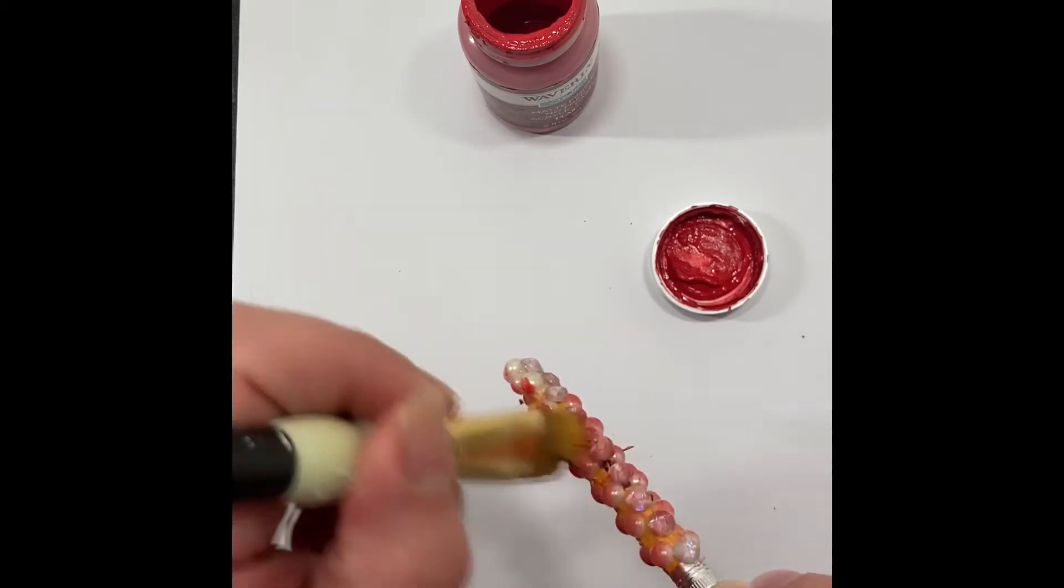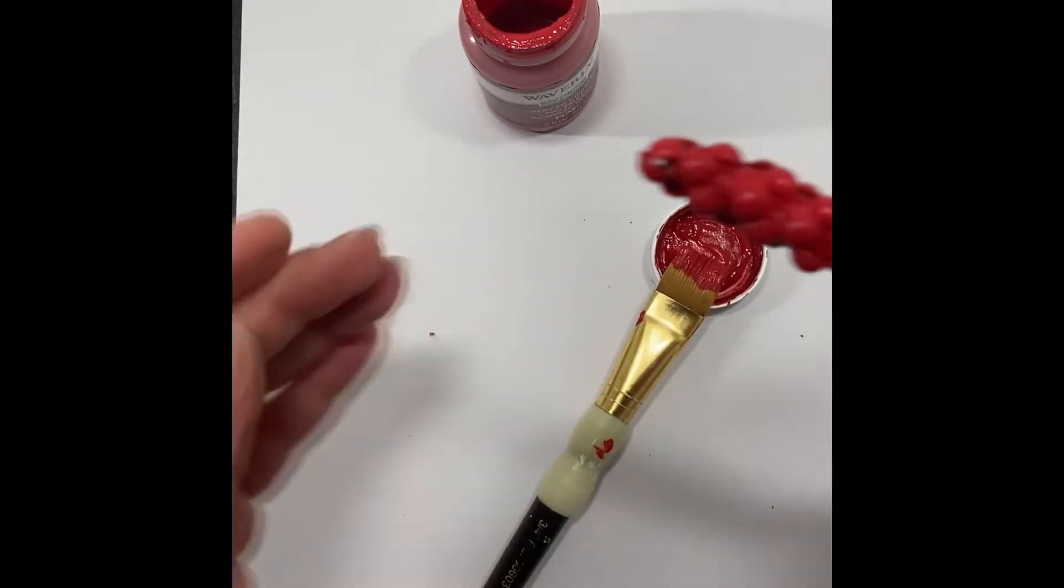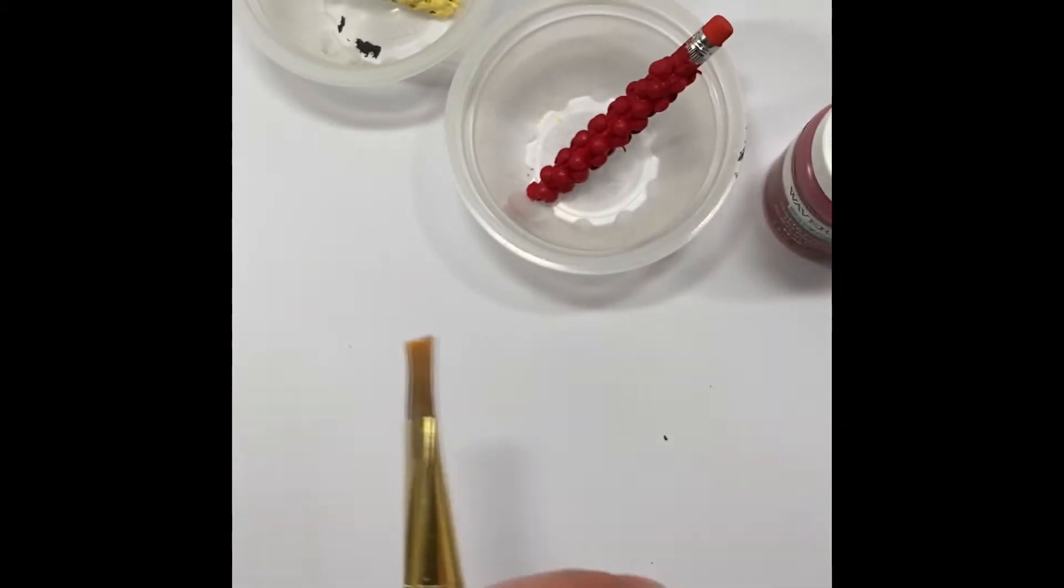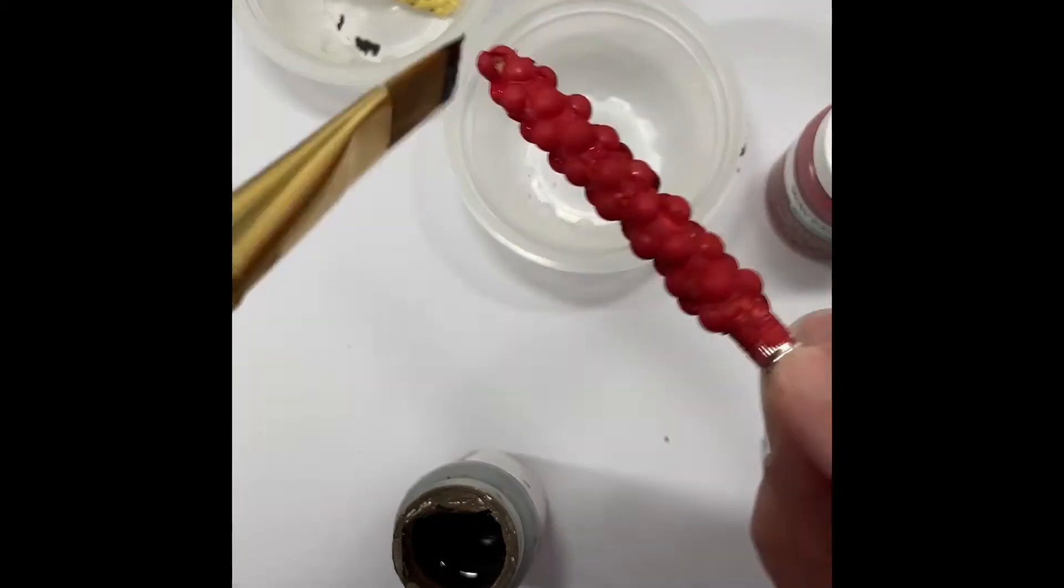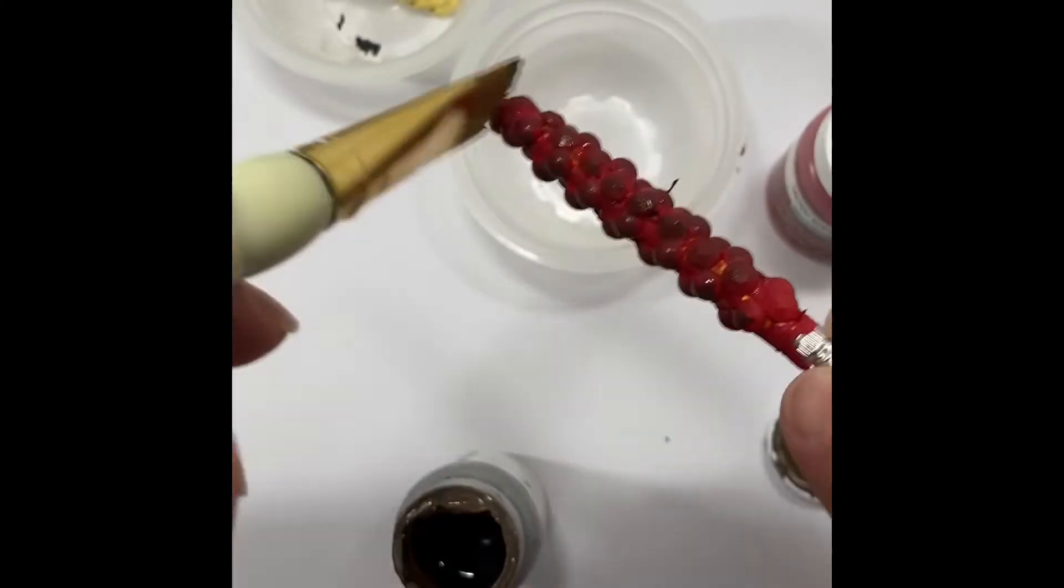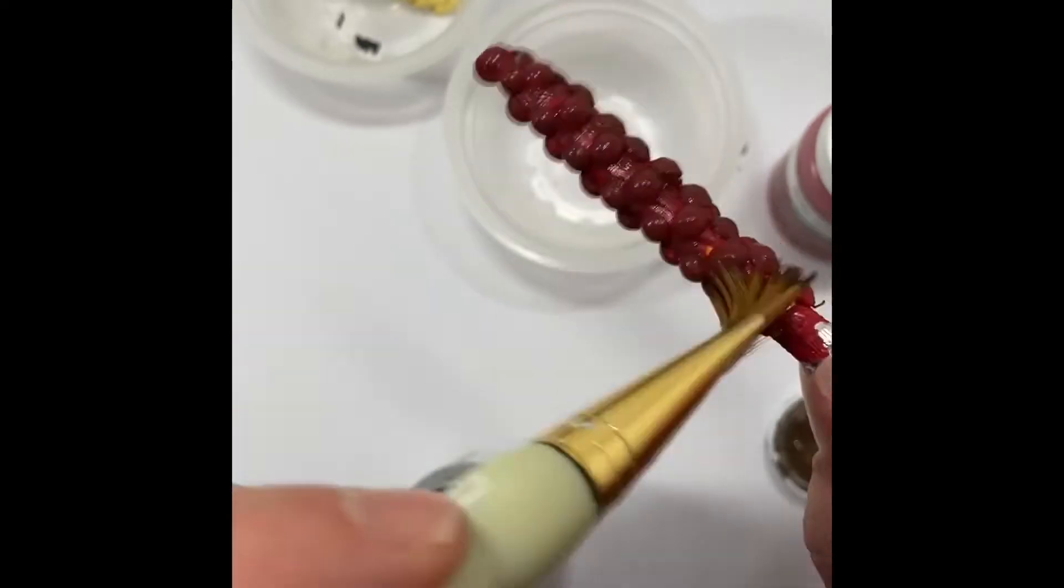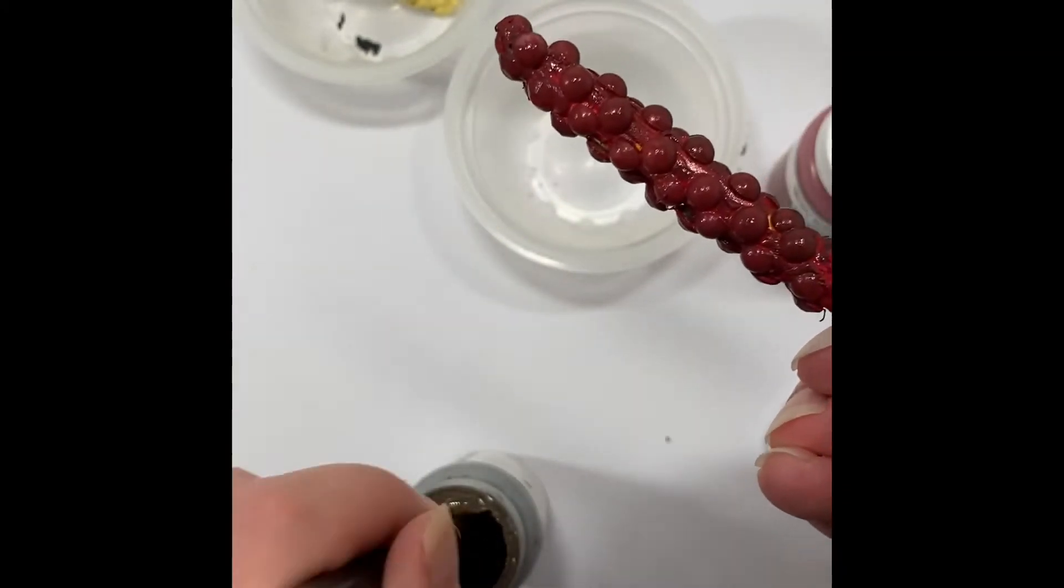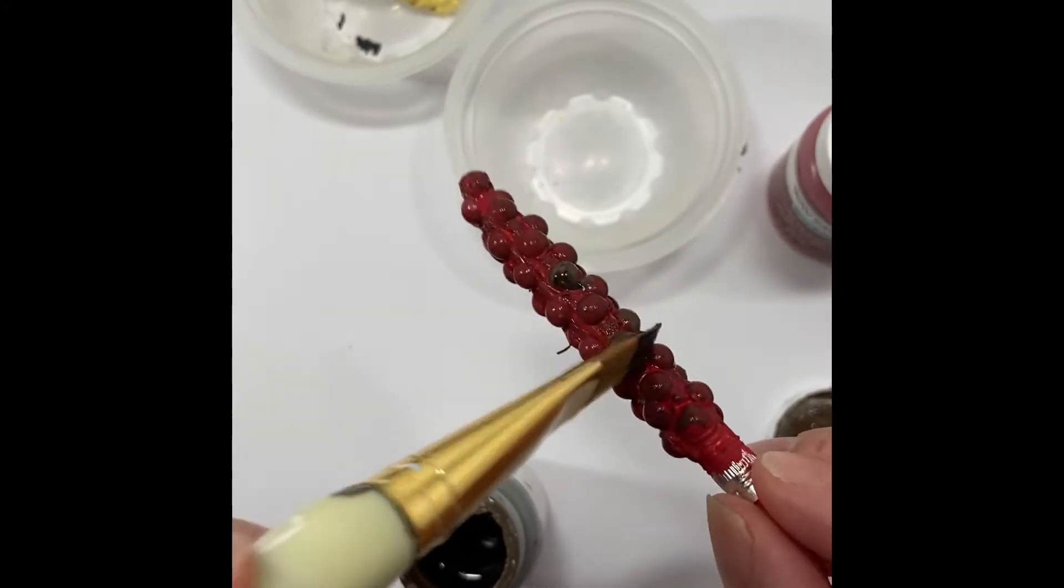I have some Waverly chalk paint here in the color of crimson. I'm just giving the, what is now corn, a nice thick coat. Before that coat completely dries, but it's almost dry, I take a little truffle chalk paint, also by Waverly, and I just brush over the tops of the corn. This is going to give that multi-tone of dried corn. And I think it adds a little more realism because I've never seen a bright crimson ear of corn before. Have you?